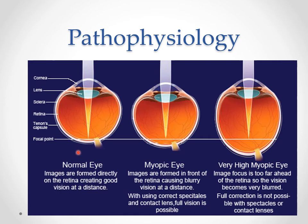Someone who has myopia or is nearsighted will have a length of the eye that's typically longer than normal, or the cornea will be a little bit steeper than normal, causing the light to bend more and fall short of the retina. An image viewed here by the viewer will be blurry.